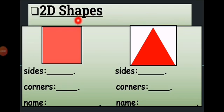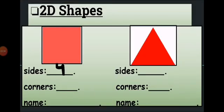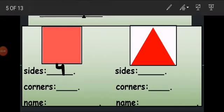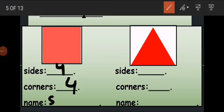We start with this shape. It is a closed shape with straight lines — no open edge. Count its sides with me: one, two, three, four. This shape has four sides. Now count its corners — a corner is the point where two lines meet: one, two, three, four. This shape has four corners, and all sides are the same. This flat 2D shape with four equal sides and four corners is called a square.